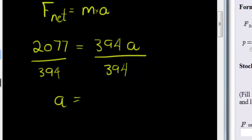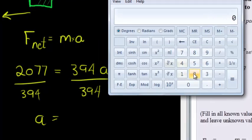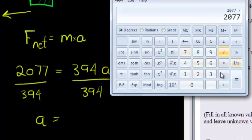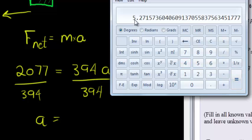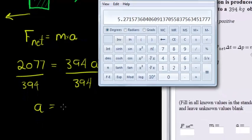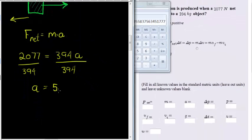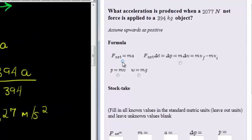This gives me an answer of, let's see, 2077 divided by 394 gives me 5.27 if I round to two decimal places, 5.27 meters per second squared. So let's go and fill it out here. We know that this is the formula that we used.